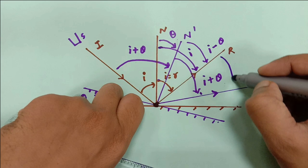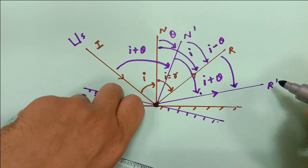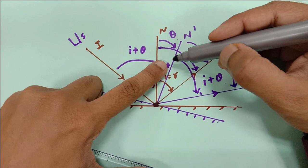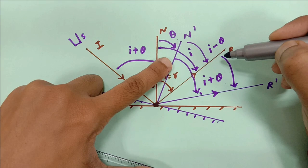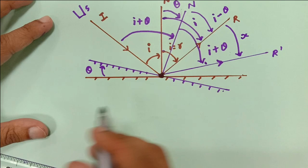I am interested in this angle, because this was my earlier reflected ray and now this is my new location of the reflected ray. So what is this angle? For that, look at this big angle — this is I plus theta minus I minus theta.